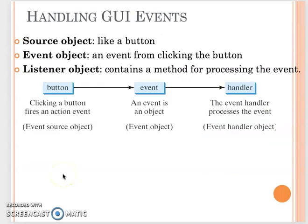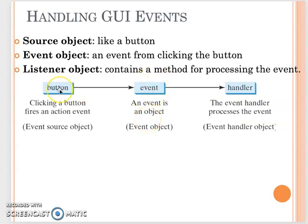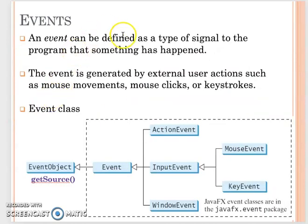Earlier when we talked about event handlers, our examples were all using the button, so we had the action event with the button as the source object. In order to create the action event, not only buttons can have that — radio buttons, checkboxes, and combo boxes all trigger the action event. But in this video I want to talk about the other two events.